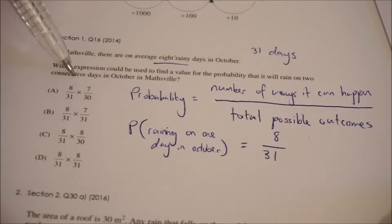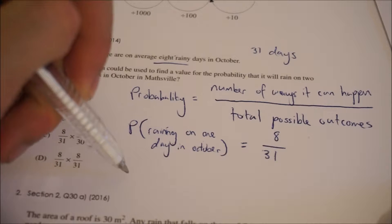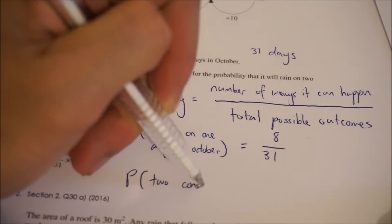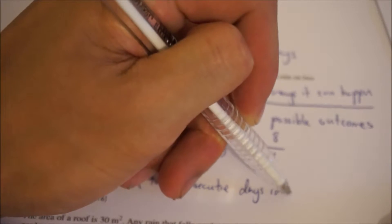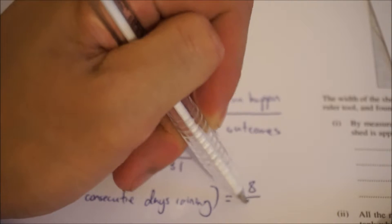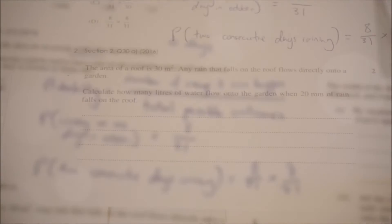The question is asking about two consecutive days. If I have two independent events, in order to calculate the probability of both happening, I multiply them together. So the probability of two consecutive days raining is going to equal eight over 31 multiplied by eight over 31. And that's how you do that question.